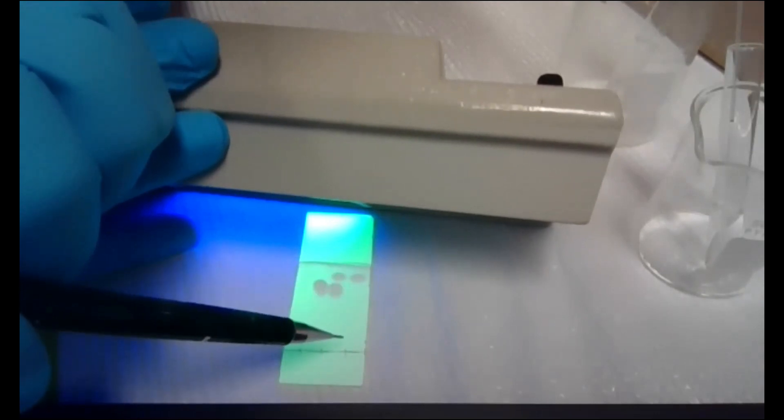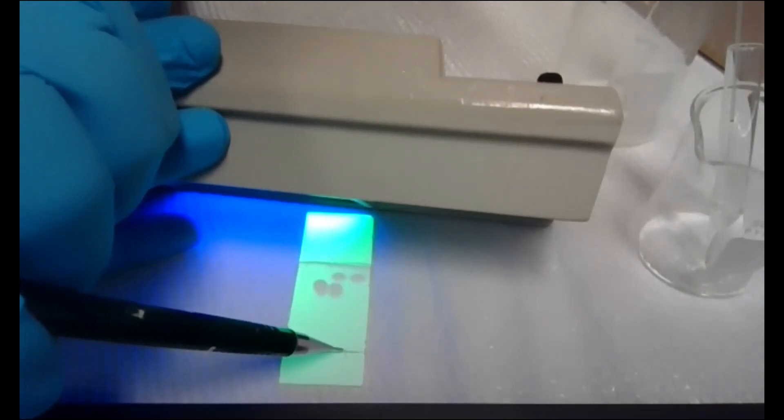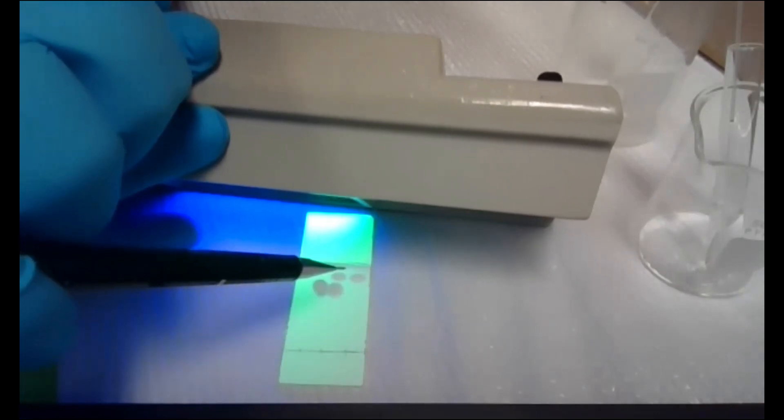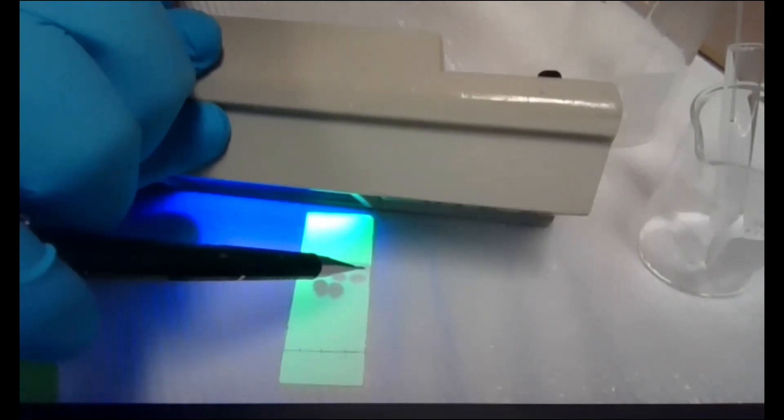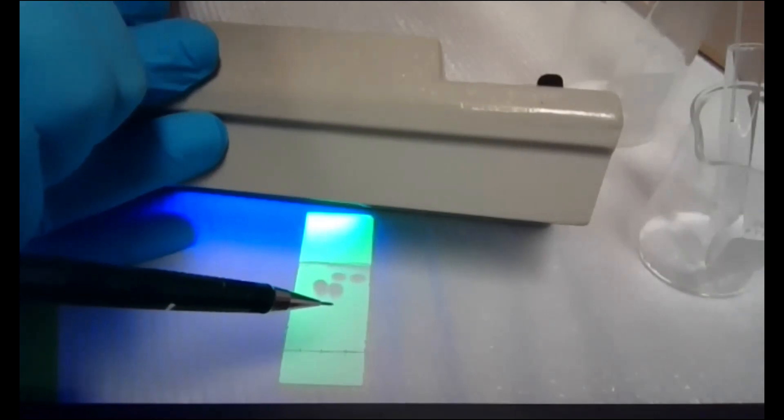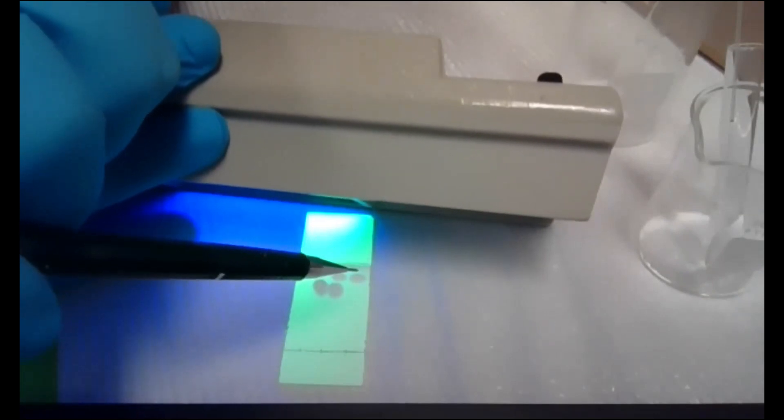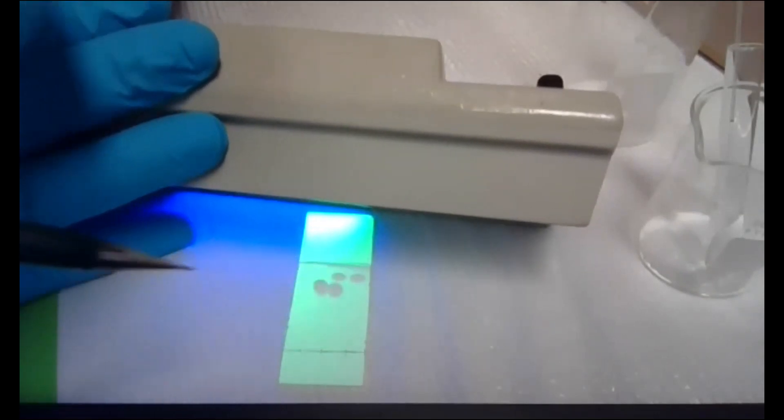And then this is our actual crystals that we made here at the end, which should be the phenacetin. So you can see there's only one spot here. We don't see a spot just underneath it that correlates to the starting material. So this reaction does indeed look like it went to completion, and we only have product.